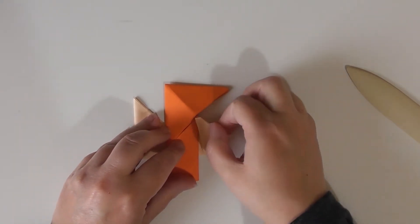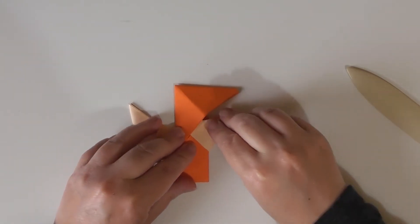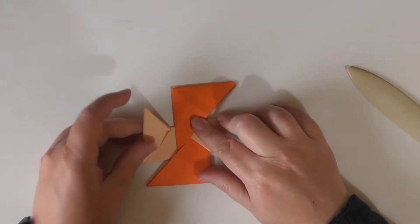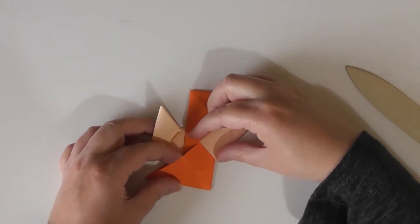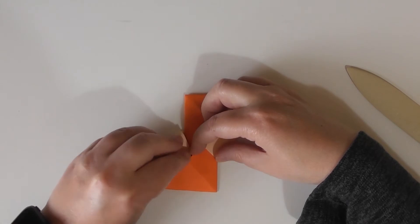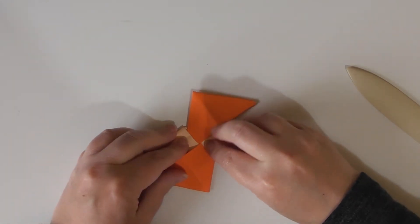And then we're going to fold this, tuck it into that flap and we're going to fold this one and tuck it into that flap. Now the first fold is easy, they just kind of slot in.